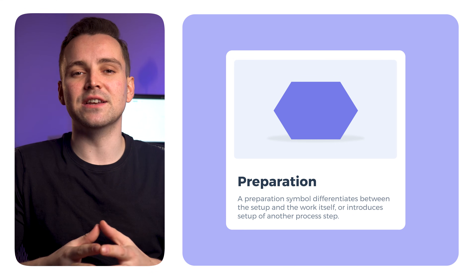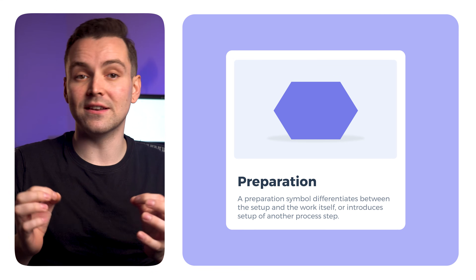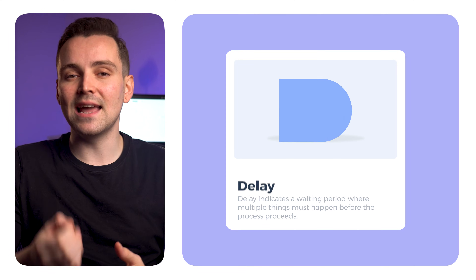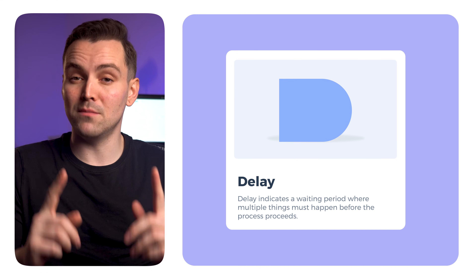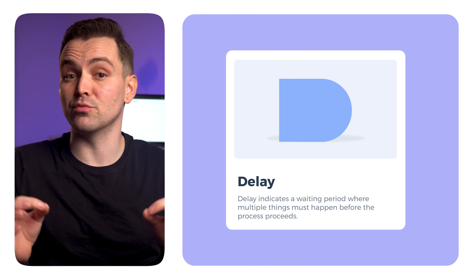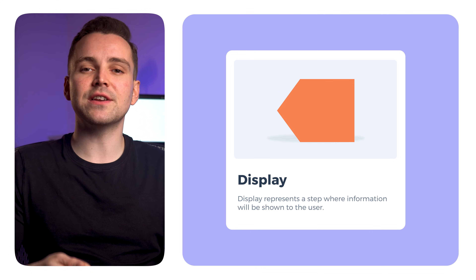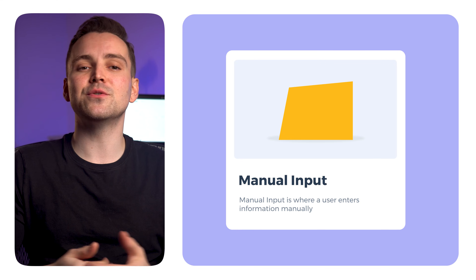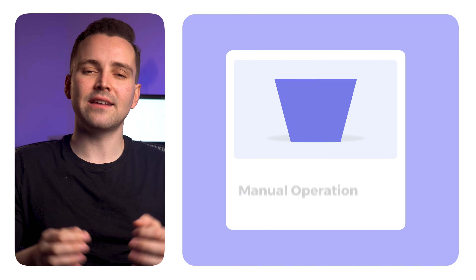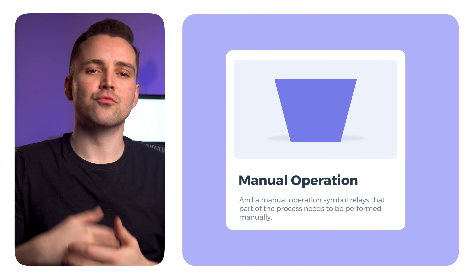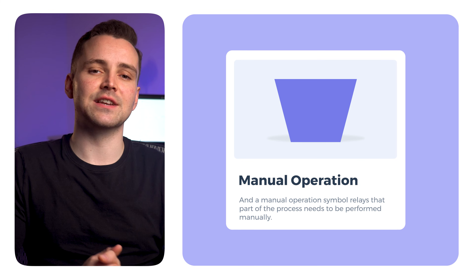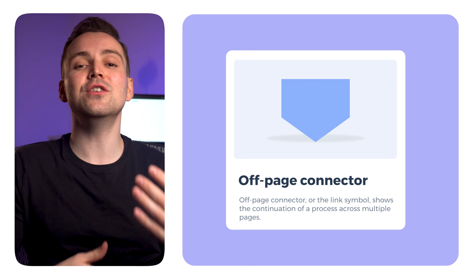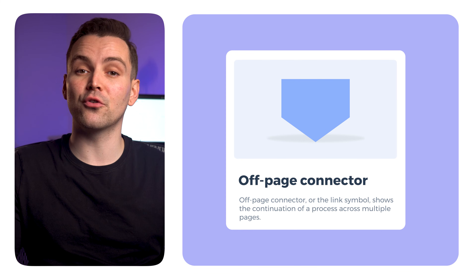A preparation symbol differentiates between the setup and the work itself, or introduces setup of another process step. Delay indicates a waiting period where multiple things must happen before the process proceeds. Display represents a step where information will be shown to the user. Manual input is where a user enters information manually. A manual operation symbol relays that part of the process needs to be performed manually. The off-page connector, or link symbol, shows the continuation of a process across multiple pages.